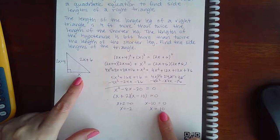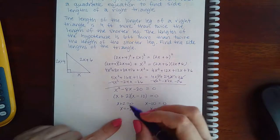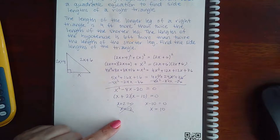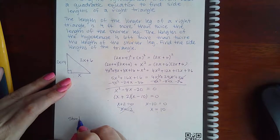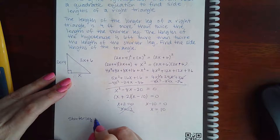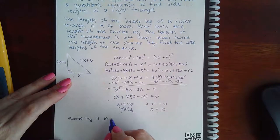Now we know the length of this measurement cannot be negative, so this is not a good answer. The only answer is 10. So that means that the shorter leg is 10 feet.